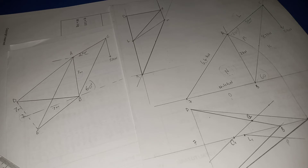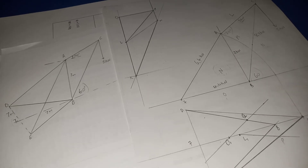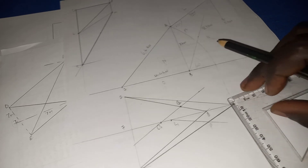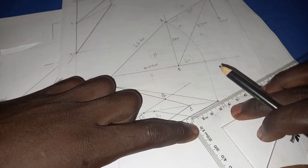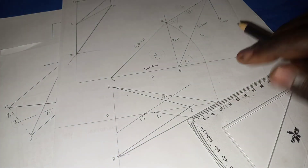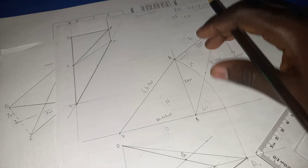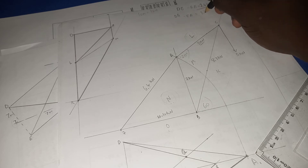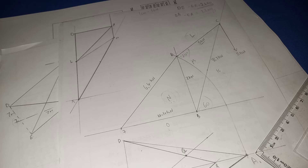Now we're going to measure this line here. The vector PA will give us our final answer. When you measure it, it's going to be 3.1 to 3.2. So the final answer for DA and EA is 3.2 kilo newtons. This is your vector result.